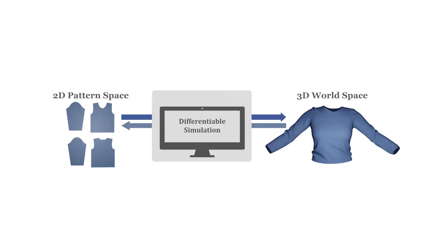To optimize for the correct 2D pattern size, cloth material, and to refine the body shape, we utilize novel advances in differentiable simulation. A differentiable simulator is the function which maps 2D to 3D by simulating the sewing and stitching of the panels, taking into account the cloth material and collisions with the underlying body shape and the garment itself.